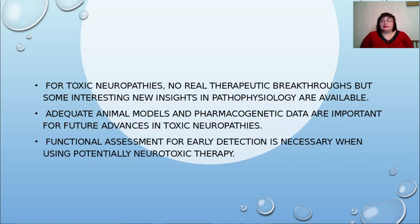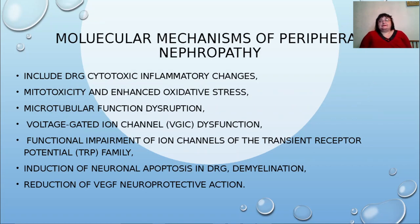Functional assessment for early detection is necessary when using potentially neurotoxic therapy. Molecular mechanisms of peripheral neuropathy include drug-induced cytotoxic inflammatory changes, mitotoxicity and enhanced oxidative stress, microtubular function disruption, voltage-gated ion channel dysfunction, functional impairment of TRP (transient receptor potential) family ion channels, induction of neuronal apoptosis and DRG demyelination, and reduction of VEGF neuroprotective action.